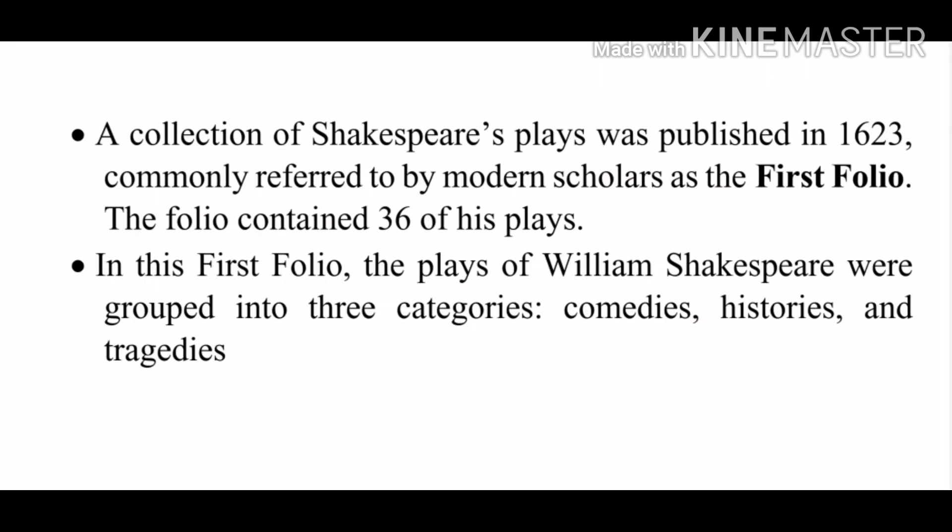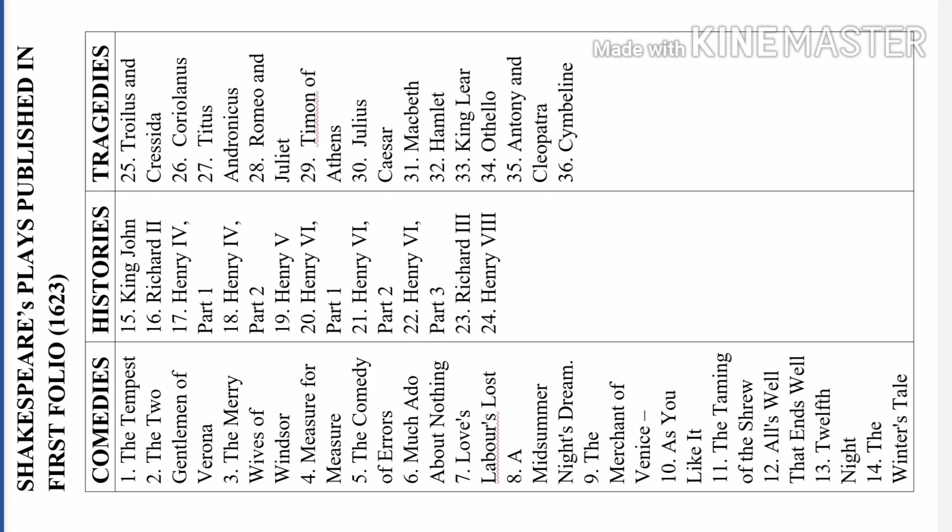A collection of his plays was published in 1623, commonly referred to by modern scholars as the First Folio. This folio contained 36 of his plays. In this folio, the plays of William Shakespeare were grouped into three categories: comedies, histories and tragedies. Out of these 36 plays, 14 plays were grouped as comedies.